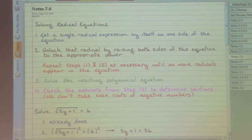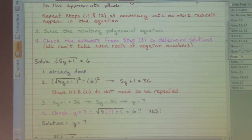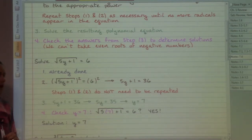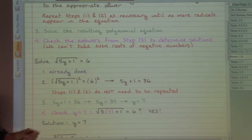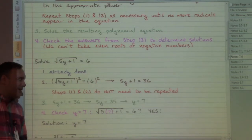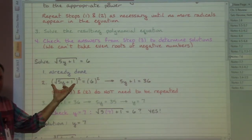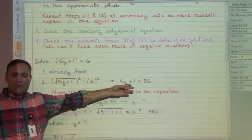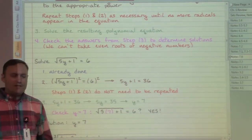In this first example, step one: get a radical all by itself. We already have the square root by itself on the left hand side of our equal sign. Step two: use an appropriate power to unlock that root. This is a square root, so we need to use a power of two. With equations, if we do it to one side we have to do it to the other side, so we apply the power of two to both sides. We do not have any more roots showing up, so we do not need to repeat steps one and two.